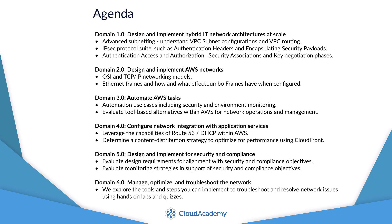Moving into design and implementation of AWS networks, we extend our knowledge of AWS networking concepts — specifically the OSI and TCP/IP networking models. We review the Open System Interconnection model, a seven-layer reference model used to aid learning, building, and troubleshooting of networks. We then review the TCP/IP model, a more simplified four-layer model used in the implementation of real-world networks such as the internet and private corporate LANs.